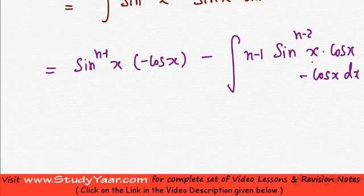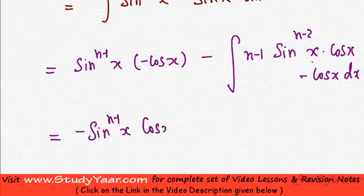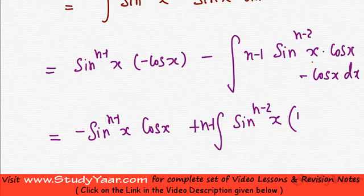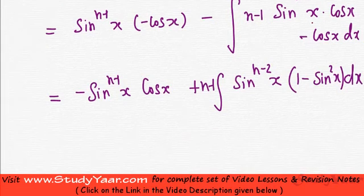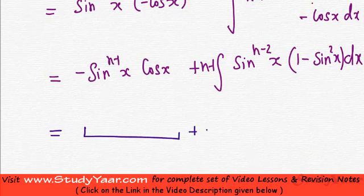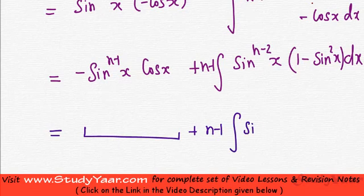This simplifies to minus sinⁿ⁻¹x cos x, plus (n minus 1) times the integral of sinⁿ⁻²x times cos²x dx. Writing cos²x as 1 minus sin²x, you get minus sinⁿ⁻¹x cos x plus (n minus 1) times the integral of sinⁿ⁻²x dx.